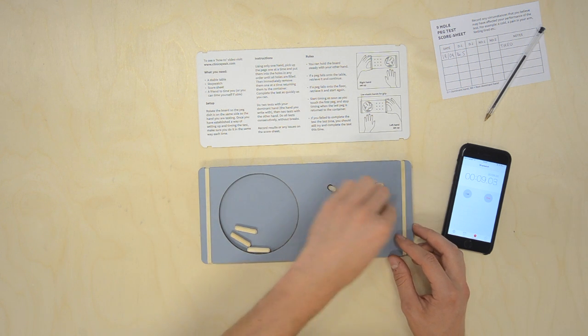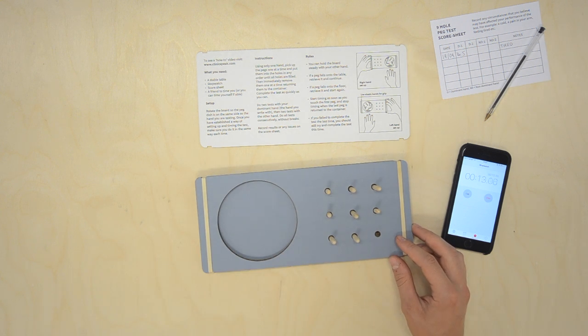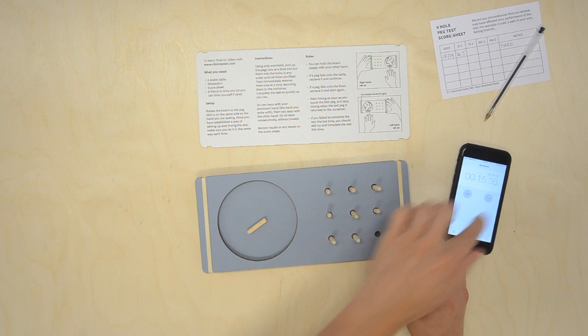If a peg falls onto the table, retrieve it and continue. If a peg falls onto the floor, retrieve it and start again.